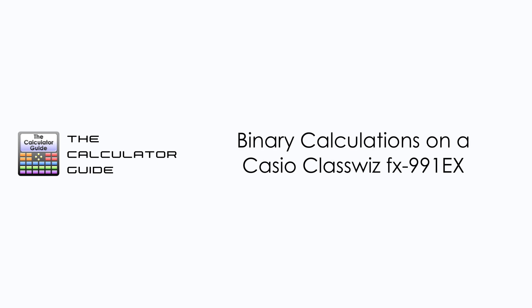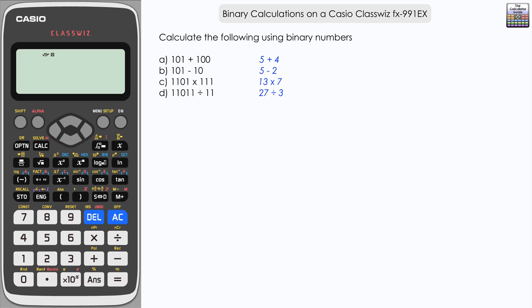Hello and welcome to the calculator guide video on binary calculations on a Casio ClassWiz FX991EX. We're going to calculate the following using binary numbers. We've got them listed here A to D and in blue I've also put the decimal equivalents of those calculations.